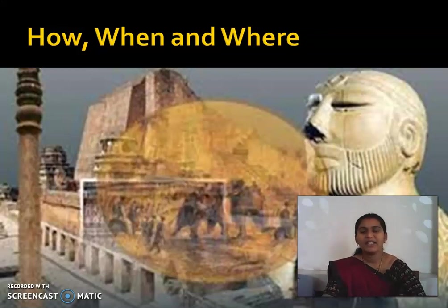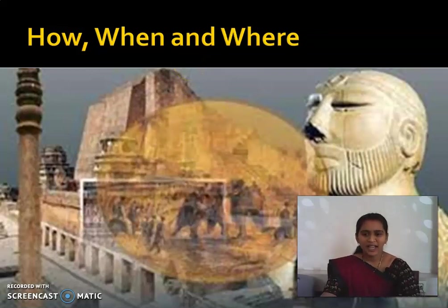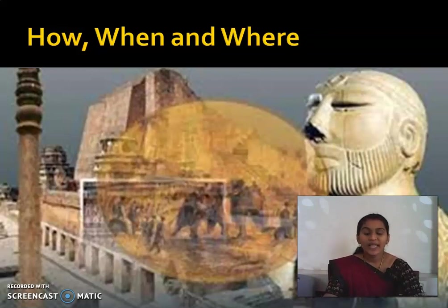We also discussed how the British people wrote Indian history, considering their Governor Generals. The first Governor General was Warren Hastings and the last was the Viceroy Lord Mountbatten. We understood that dates are important in history, but other things are also very important — such as when and where events or battles happened.